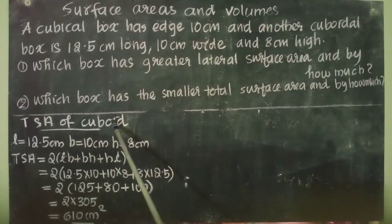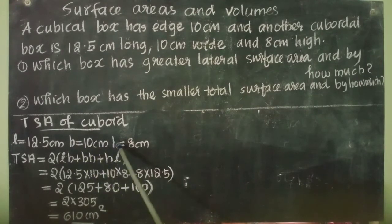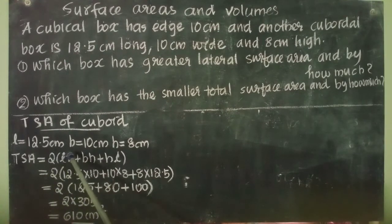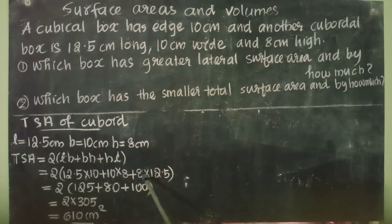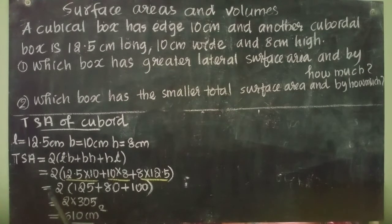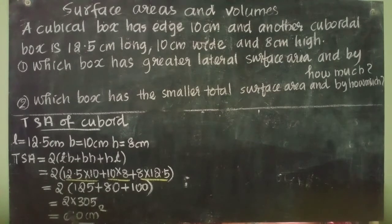Total surface area of cuboid: L = 12.5 cm, B = 10 cm, H = 8 cm. TSA = 2 × (LB + BH + HL) = 2 × (12.5×10 + 10×8 + 8×12.5) = 2 × (125 + 80 + 100) = 2 × 305 = 610 cm².